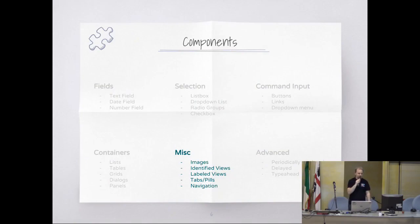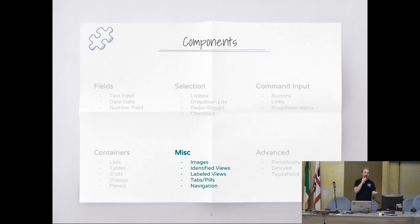So in utilities, things like images, identified web views — a really useful component because when you want to render some part of the document model, you always need it to have an ID. This component just renders something and ensures it will have an ID, so we can ask for it later and use it in interactions.